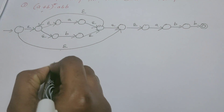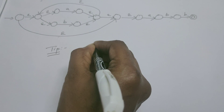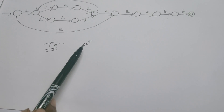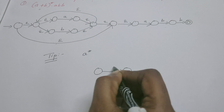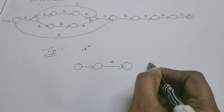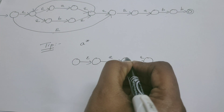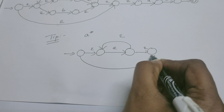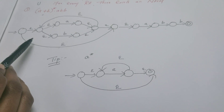Now I will tell you an important tip. I will draw an NFSM for the regular expression a*. The way I draw the NFSM for a*, the similar way you have to construct for (a union b)* also. First I need a machine for a. To convert this into a*, I need a new start state and a new final state, both connected via epsilon transitions. From the old final state to the old start state, one epsilon transition. From the new start state to the new final state, one epsilon transition. This is a*.